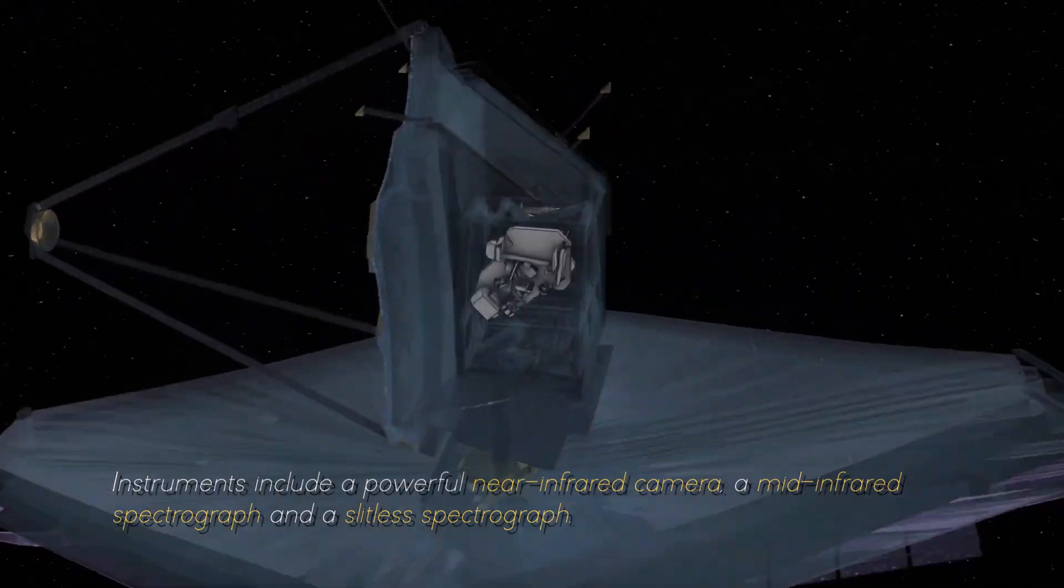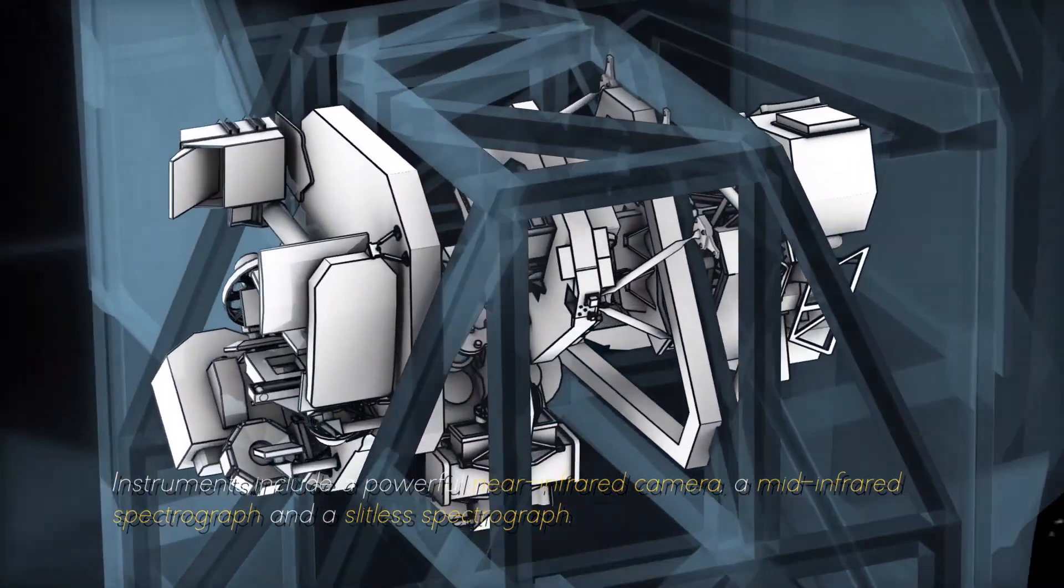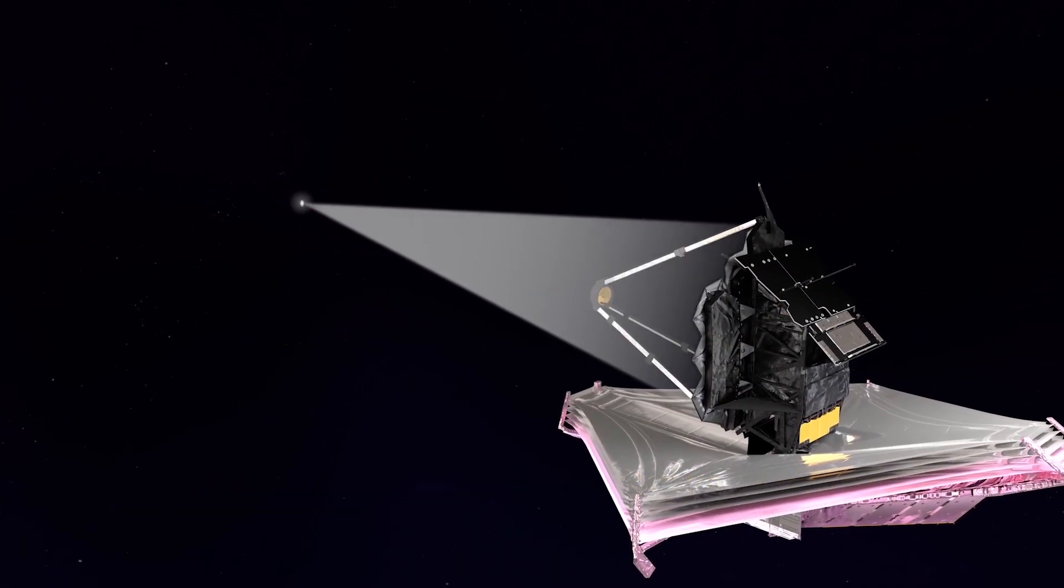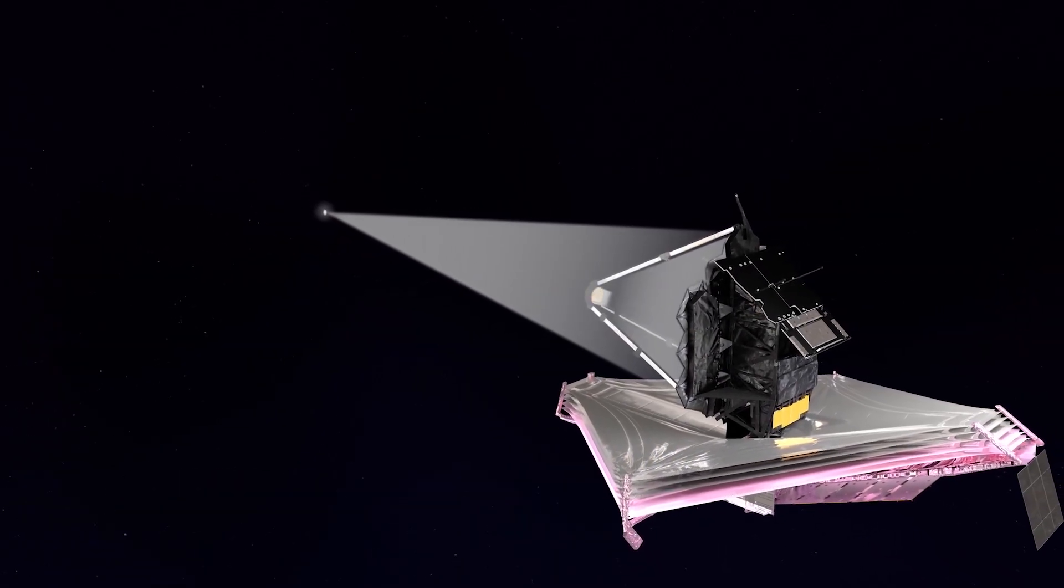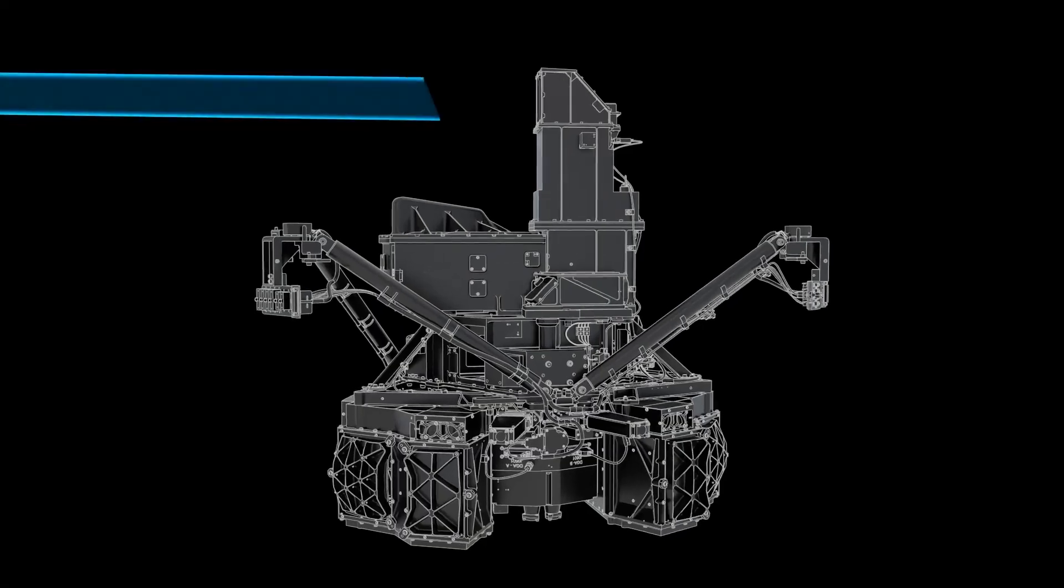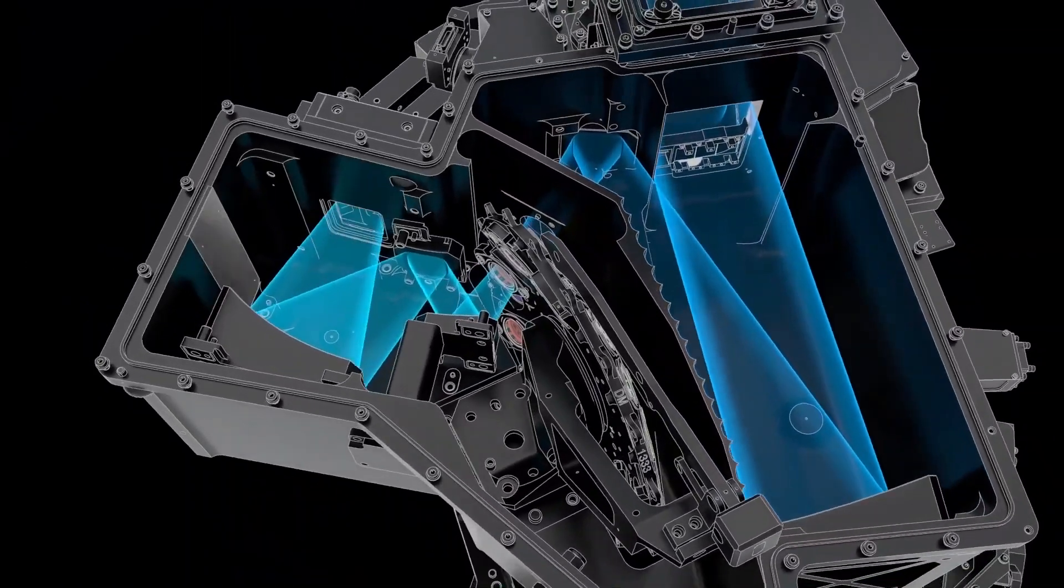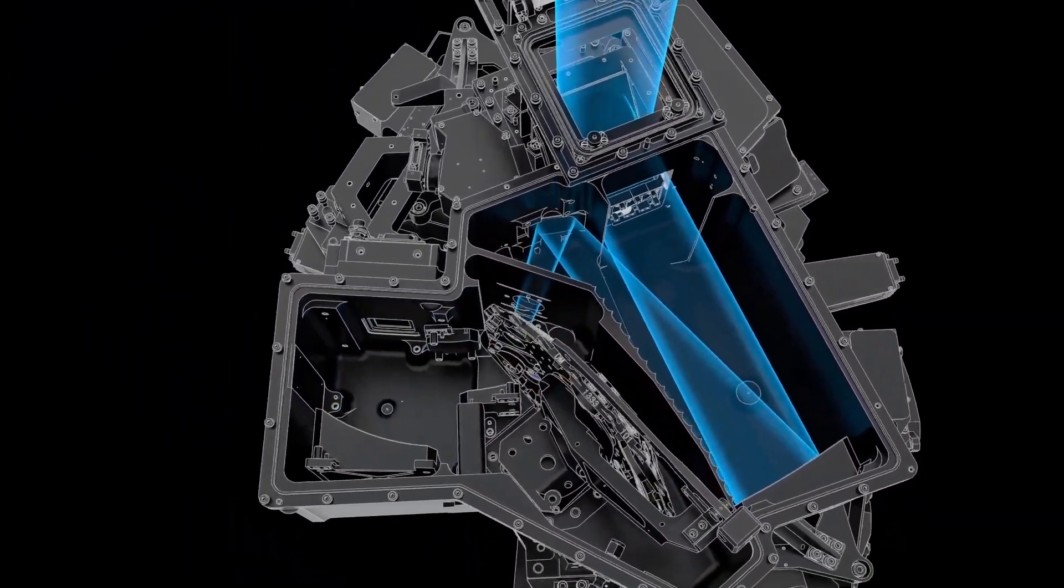Instruments include a powerful near-infrared camera, a mid-infrared spectrograph, and a slitless spectrograph. These instruments work together to capture images, measure spectra, and study the properties of objects ranging from the oldest galaxies to the planets of our solar system.